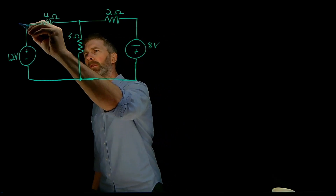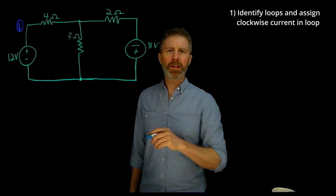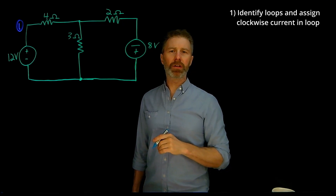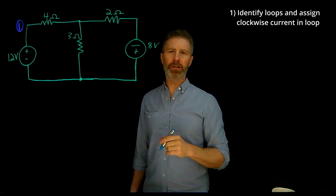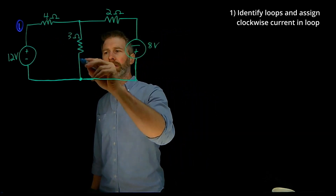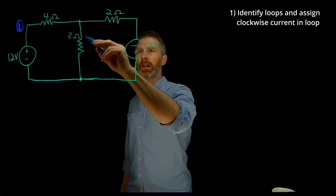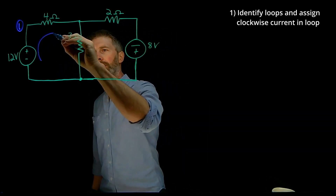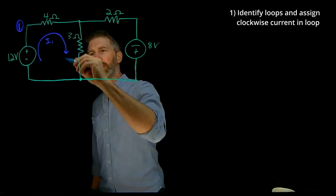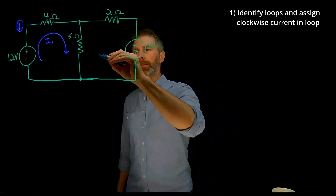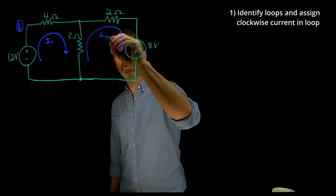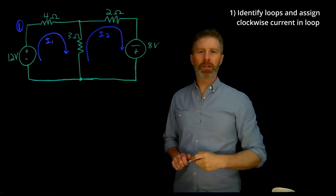Step number one is to identify the loops and then arbitrarily define the current to be flowing in the loop in a particular direction. Usually we use clockwise. So here's one loop of the circuit and here's the other loop. I'll call the current in the first loop I1, going in the clockwise direction, and the current in the second loop I2, also going in the clockwise direction.